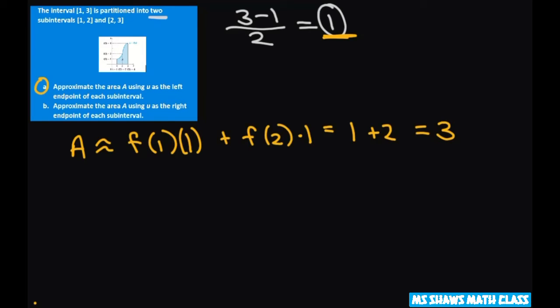Now for the second part, we're starting at 2. So that's going to be f of 2 times 1 plus f of 3 times 1. And that's going to equal 2 times 1 plus 4 times 1, and that equals 6.